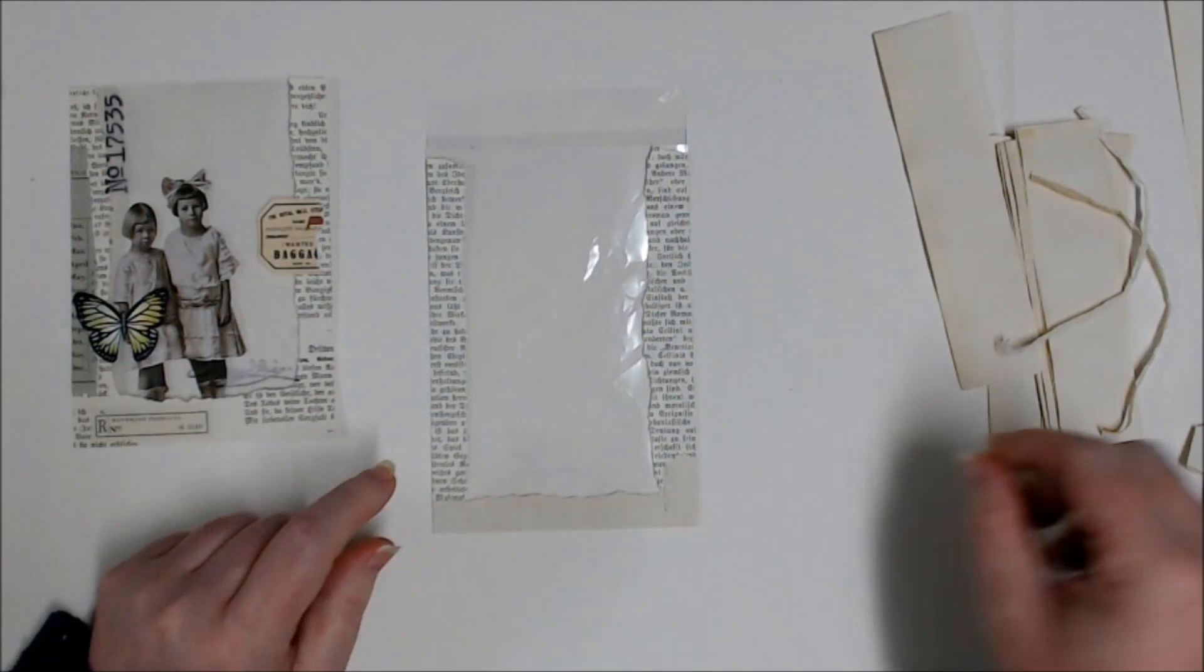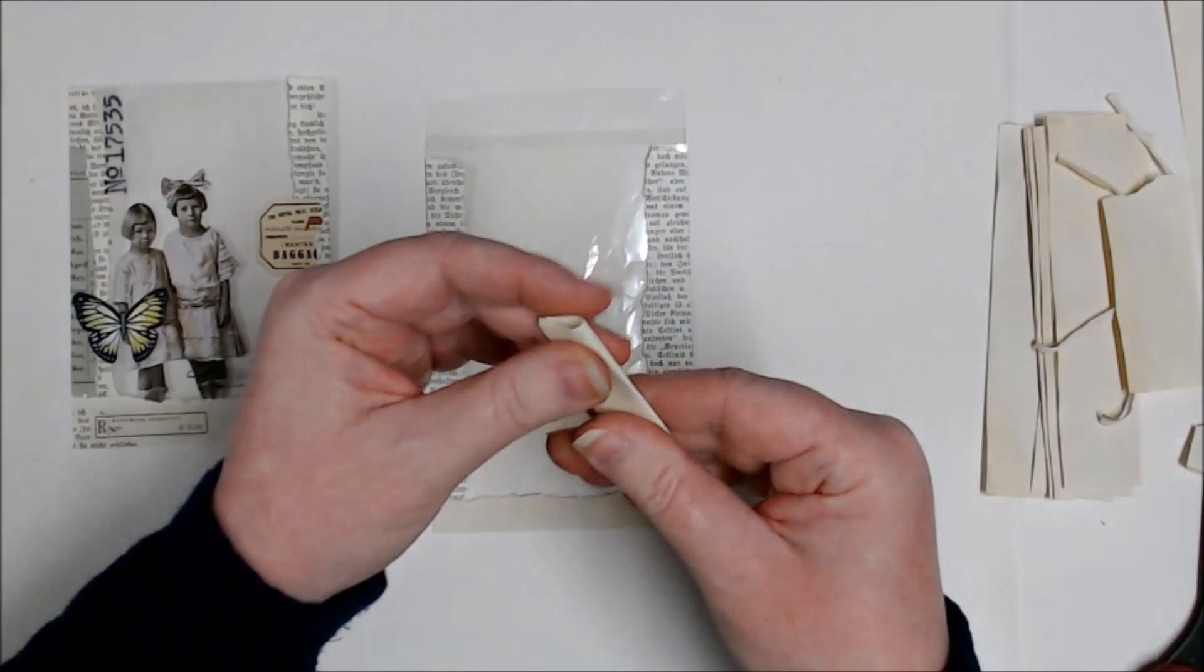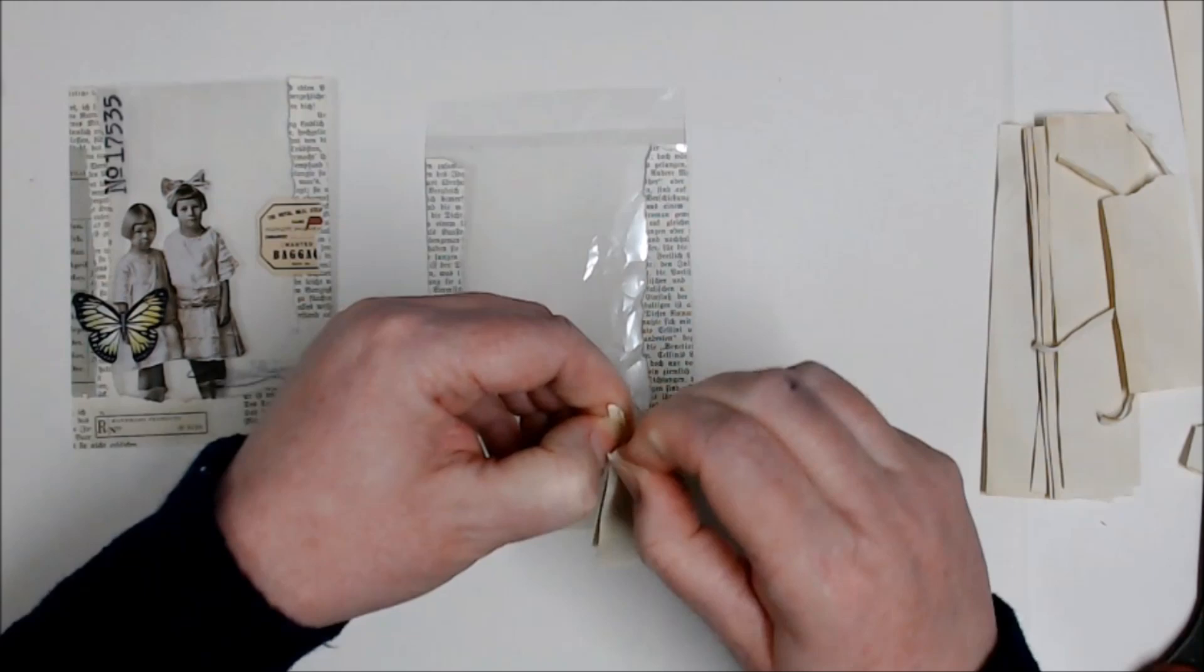And then to break up the text a little bit, I'm just going to pick a couple of other bits of scrap paper and just glue them over the top, just for a bit of variation.